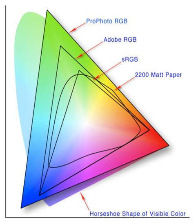Color space conversion is the translation of the representation of a color from one basis to another. This typically occurs in the context of converting an image that is represented in one color space to another color space, the goal being to make the translated image look as similar as possible to the original.